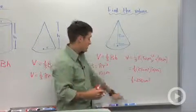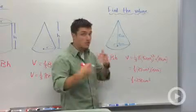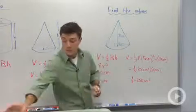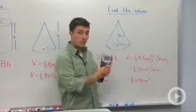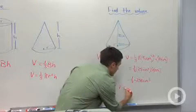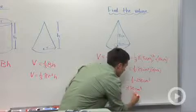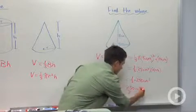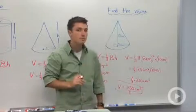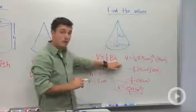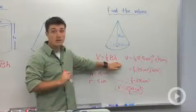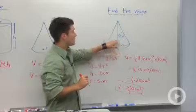Now some teachers will say leave it as a fraction. Some teachers will say put in a decimal. If they want a decimal, just use your calculator. So I'm going to say that the volume here is two hundred and fifty pi cubic centimeters divided by three. The key thing to this problem is remembering our volume formula, and that the only two things you need to know to calculate the volume of a cone is the radius and the height.